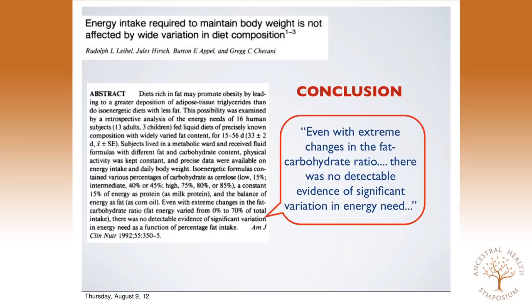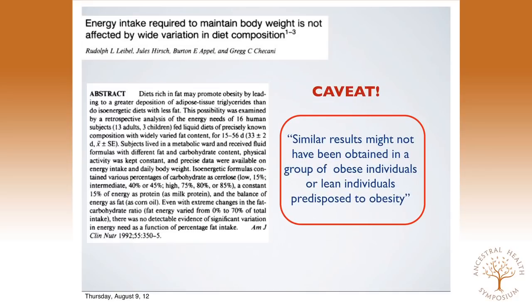The most famous of these studies is a 1992 study: 'Energy intake required to maintain body weight is not affected by wide variation in diet composition — even with extreme change in the fat-carb ratio, there was no detectable evidence of significant variation in energy need.' But the caveat: they used lean, middle-aged people who had already proven they could tolerate a high-carb diet. The authors' own caveat was that similar results might not have been obtained in obese individuals or those predisposed to obesity. Aren't those the people we want to study?